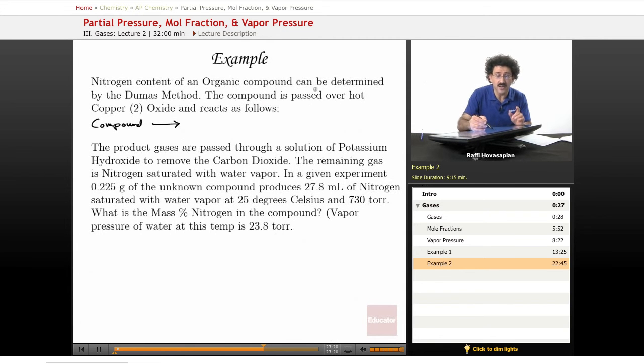The nitrogen content of an organic compound can be determined by the Dumas method. The compound is passed over hot copper oxide and reacts as follows. So I'm going to write the reaction. You take the compound, pass it over hot copper oxide, and you end up producing nitrogen gas, CO2 gas, and water vapor, water gas.